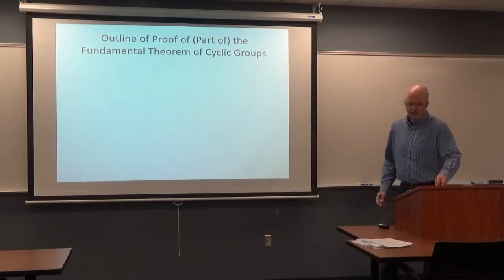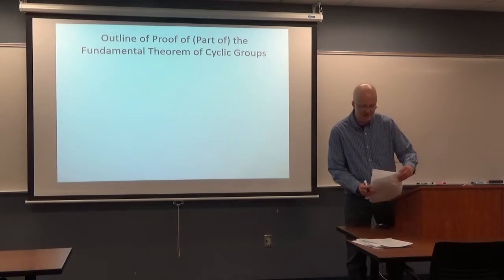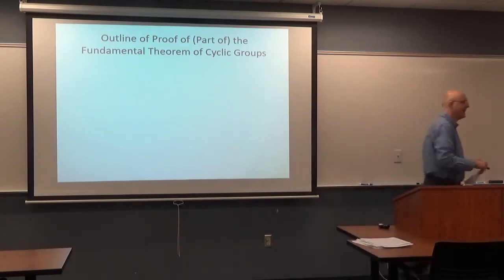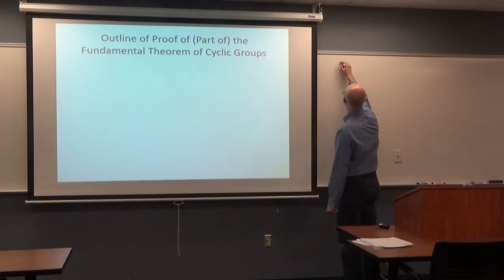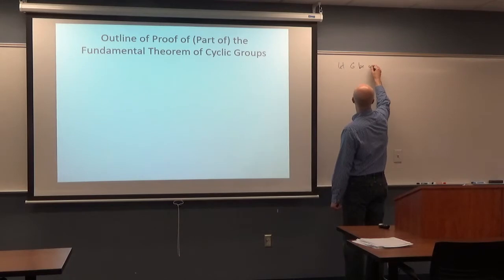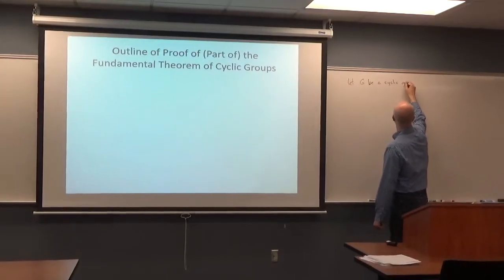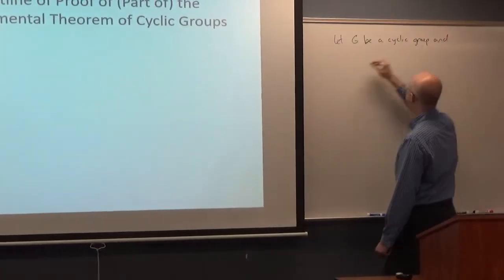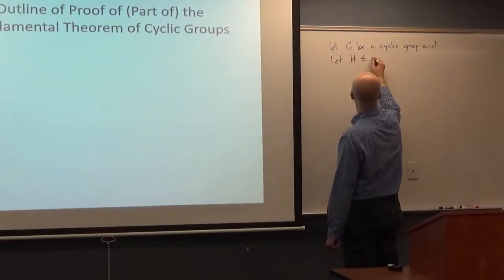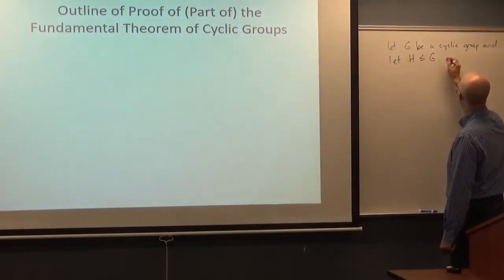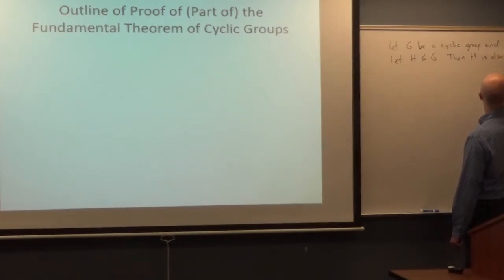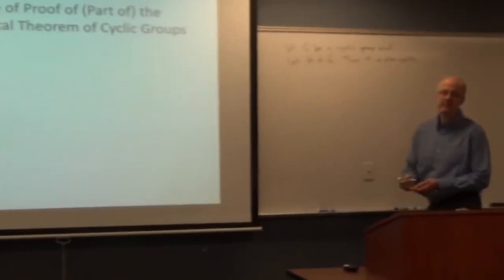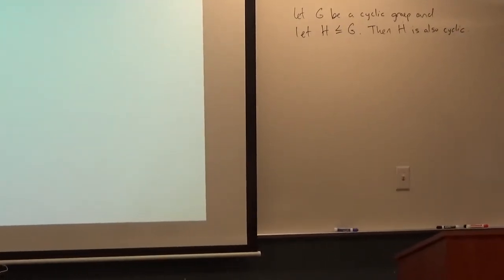Here's an outline. We're going to outline the proof that any subgroup of a cyclic group must itself be cyclic. Let G be a cyclic group and let H be a subgroup of G. Then H is also cyclic. That's what we're going to outline the proof of here.